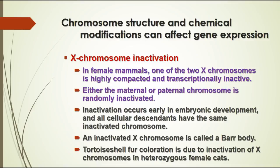Another thing that occurs in female mammals is X chromosome inactivation. Males only need one X chromosome, and apparently only one is needed for cell function, so in female mammals one of the two X chromosomes is packed up tightly — called a Barr body. It becomes inactive in terms of transcription, and it's not any specific one; it's randomly either the maternal or paternal chromosome that gets inactivated, occurring early in embryonic development.